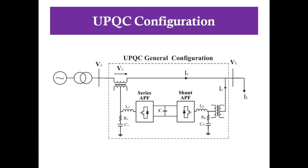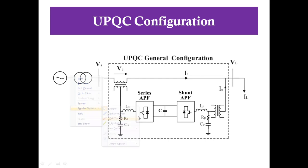This is the general configuration of UPQC. It consists of two filters. One is Series Active Power Filter and another one is Shunt Active Power Filter. The Series Active Power Filter is connected in series with the power system, and the Shunt Active Filter is connected in parallel with the power system.